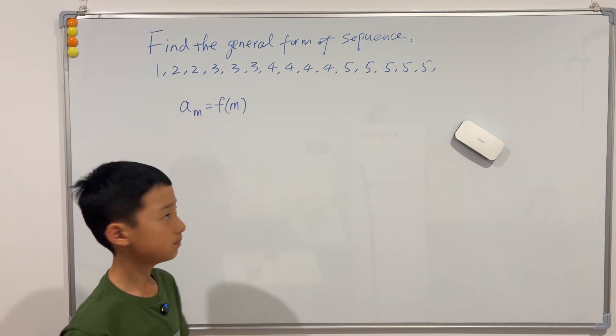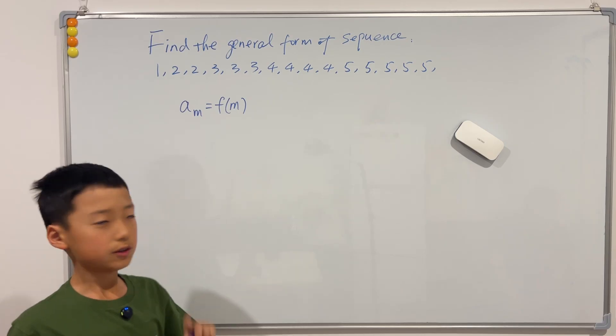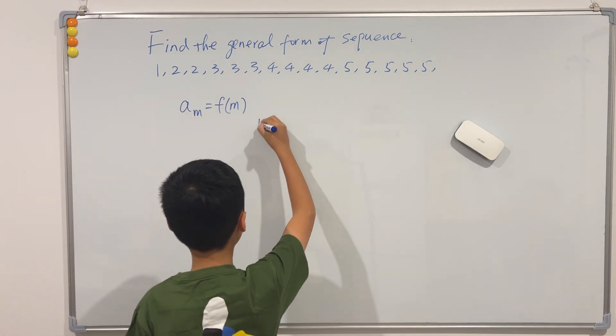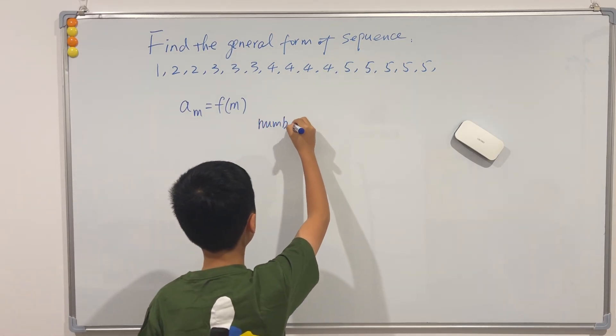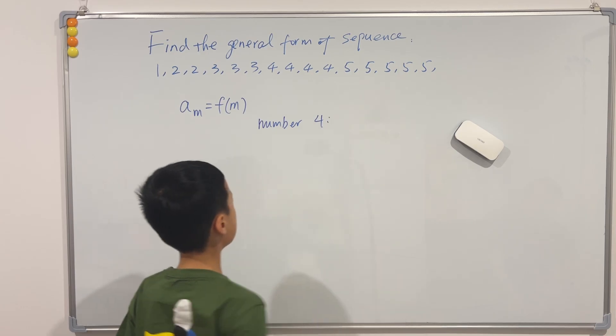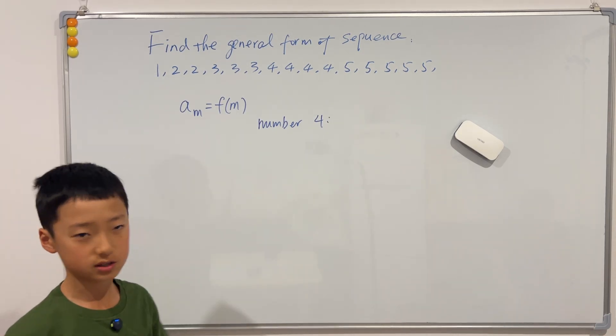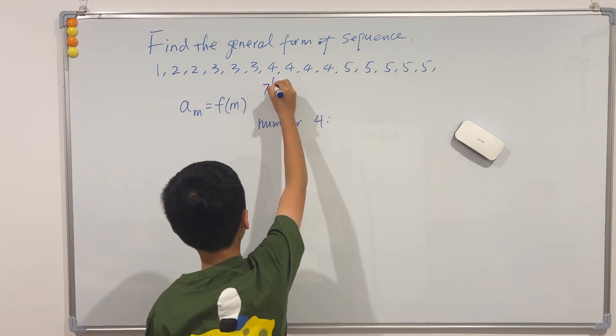So the first step in doing this, I'm first going to bring up an example. If we have the number 4, then we see where does the number 4's position start? Well, it starts at the seventh term.